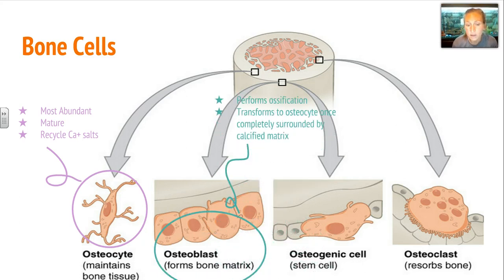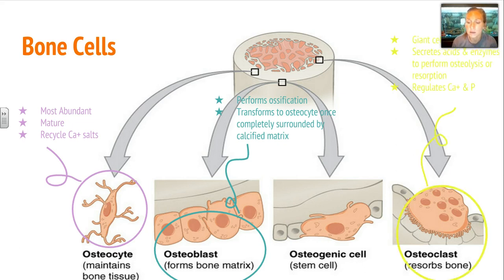You also have the osteoblast, which helps form bone matrix in a process called ossification. They transform into an osteocyte once completely surrounded by a calcified matrix. Finally, the osteoclast is a giant cell with an abundance of nuclei. It secretes acids and enzymes to perform osteolysis or resorption — a breaking down of bone — which helps regulate the amount of calcium and phosphate in the body.